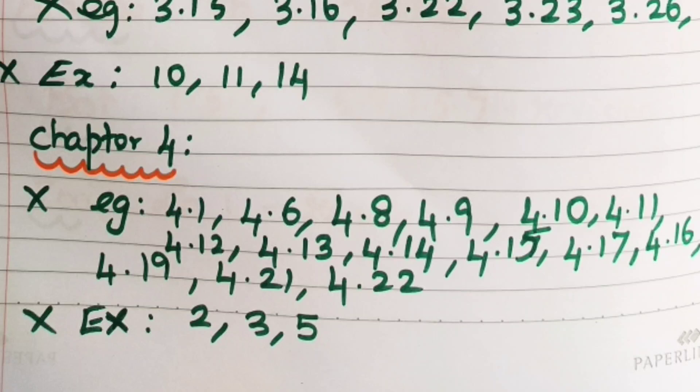In Chapter 4 examples, there are 4.1, 4.6, 4.8, 4.9, 4.10, 4.11, 4.12, 4.13, 4.14, 4.15, 16, 17, 19, 21, 22.